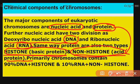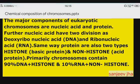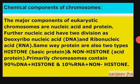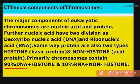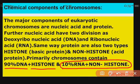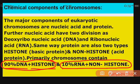Looking at the percentage composition of a chromosome: primarily a chromosome contains 90% DNA plus histone, and 10% RNA and non-histone, making up 100% of the chromosome. I hope the chemical components of chromosomes and their composition are now clear.